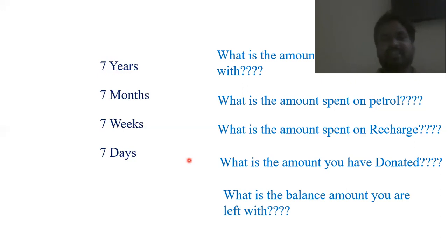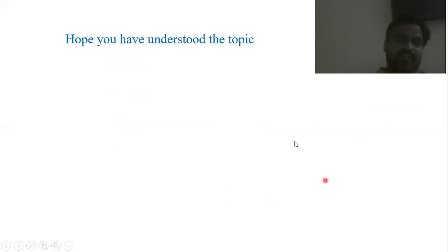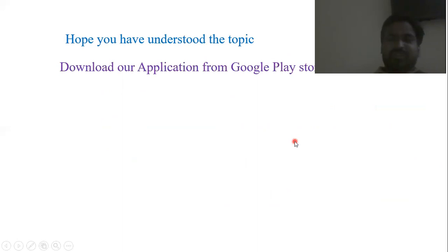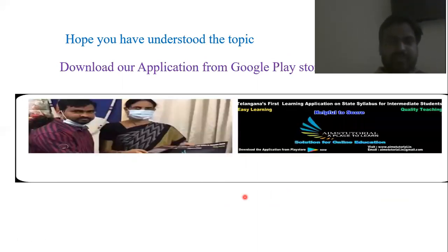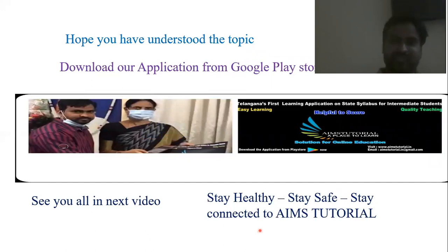Just love accounts — what is account? What is our money, where are we spending it, what we are earning, what we are spending, and what we are left out with. Hope you have understood the topic. Download our application from Google Play Store now. See you all in the next video. Stay healthy, stay safe, stay connected to AIMS Tutorial. Thank you for watching.